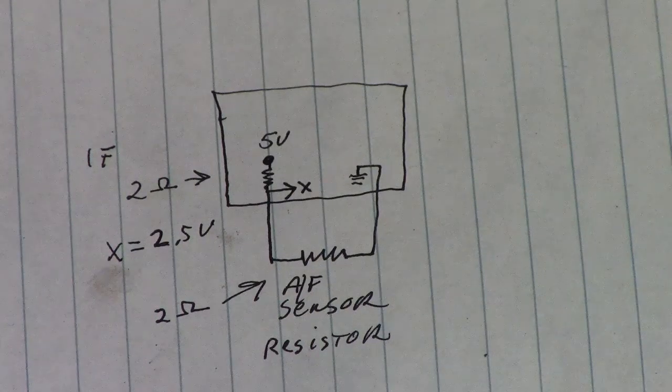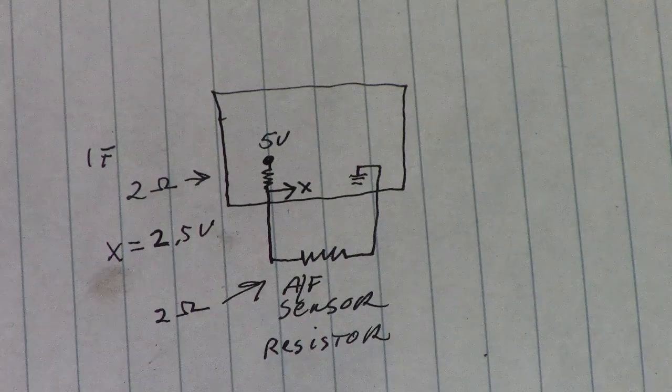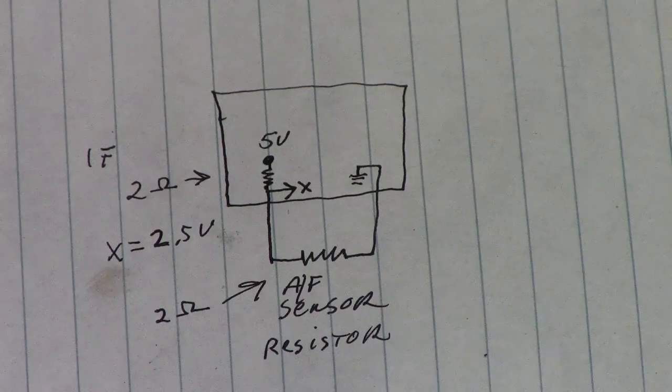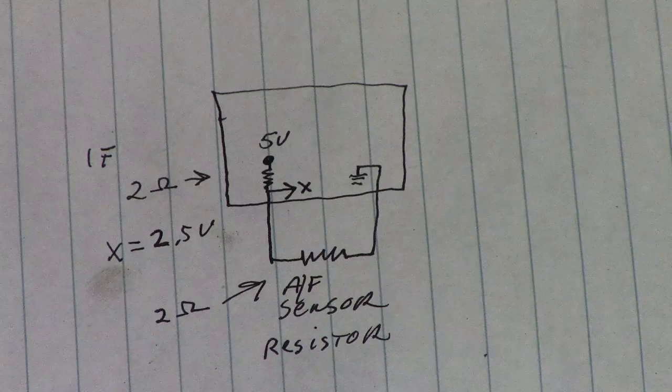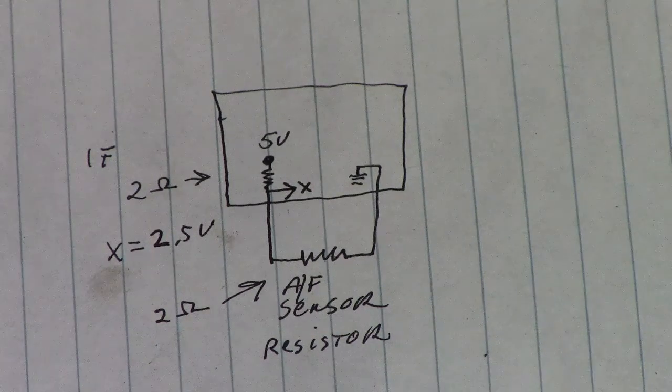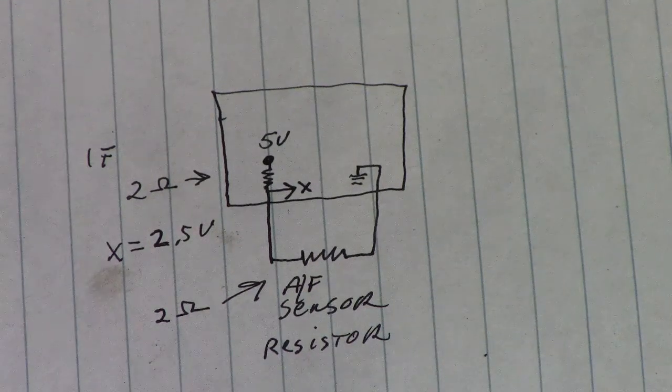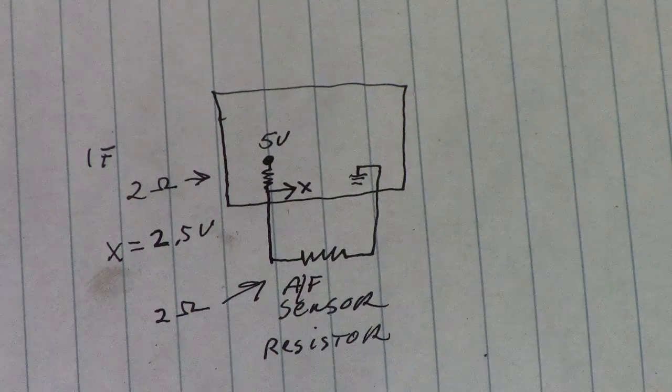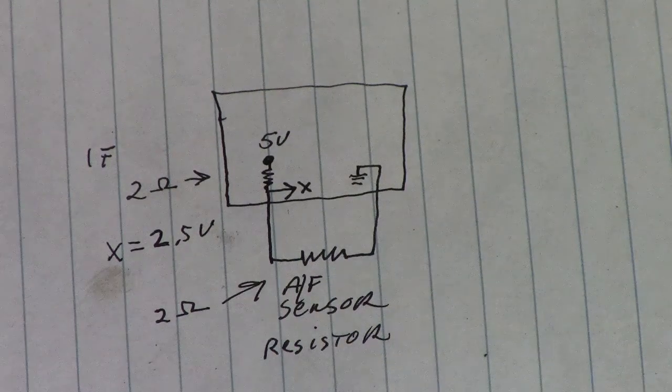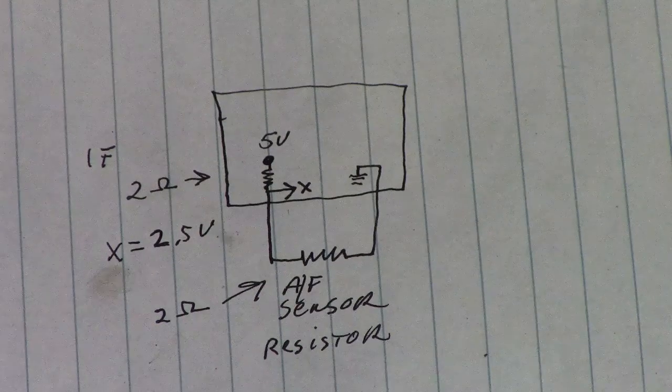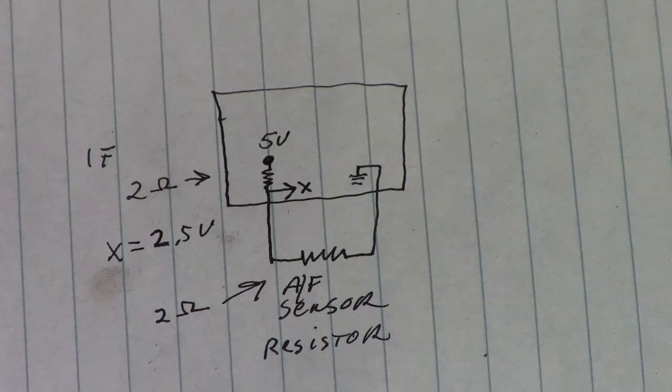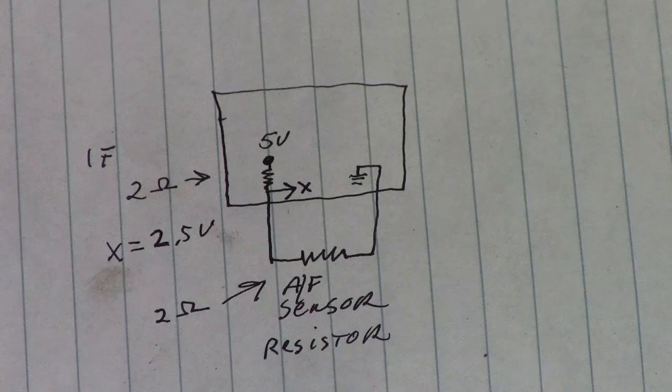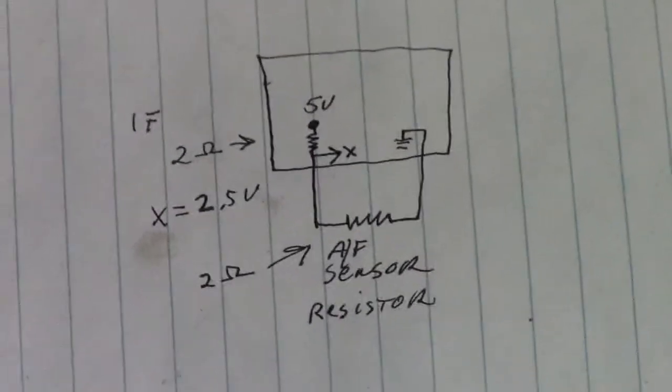If both resistors were equal, as in 2 ohm and 2 ohm, we would see 2.5 volts on that one wire being applied to the air fuel ratio sensor, and 2.5 volts would be acknowledged inside the PCM. As the resistance changes in that sensor, we can identify anything from 0 volts to 5 volts within that system.